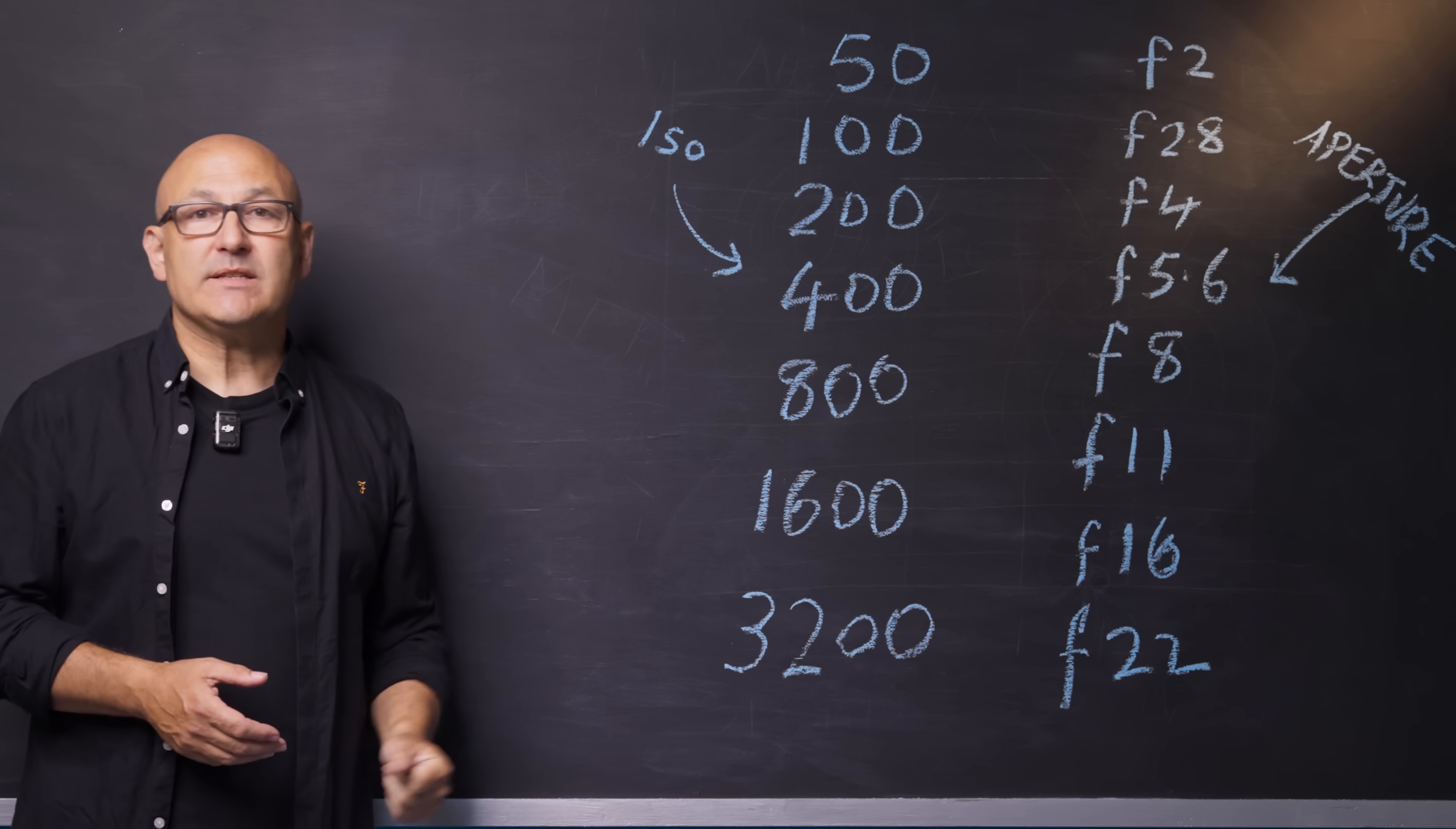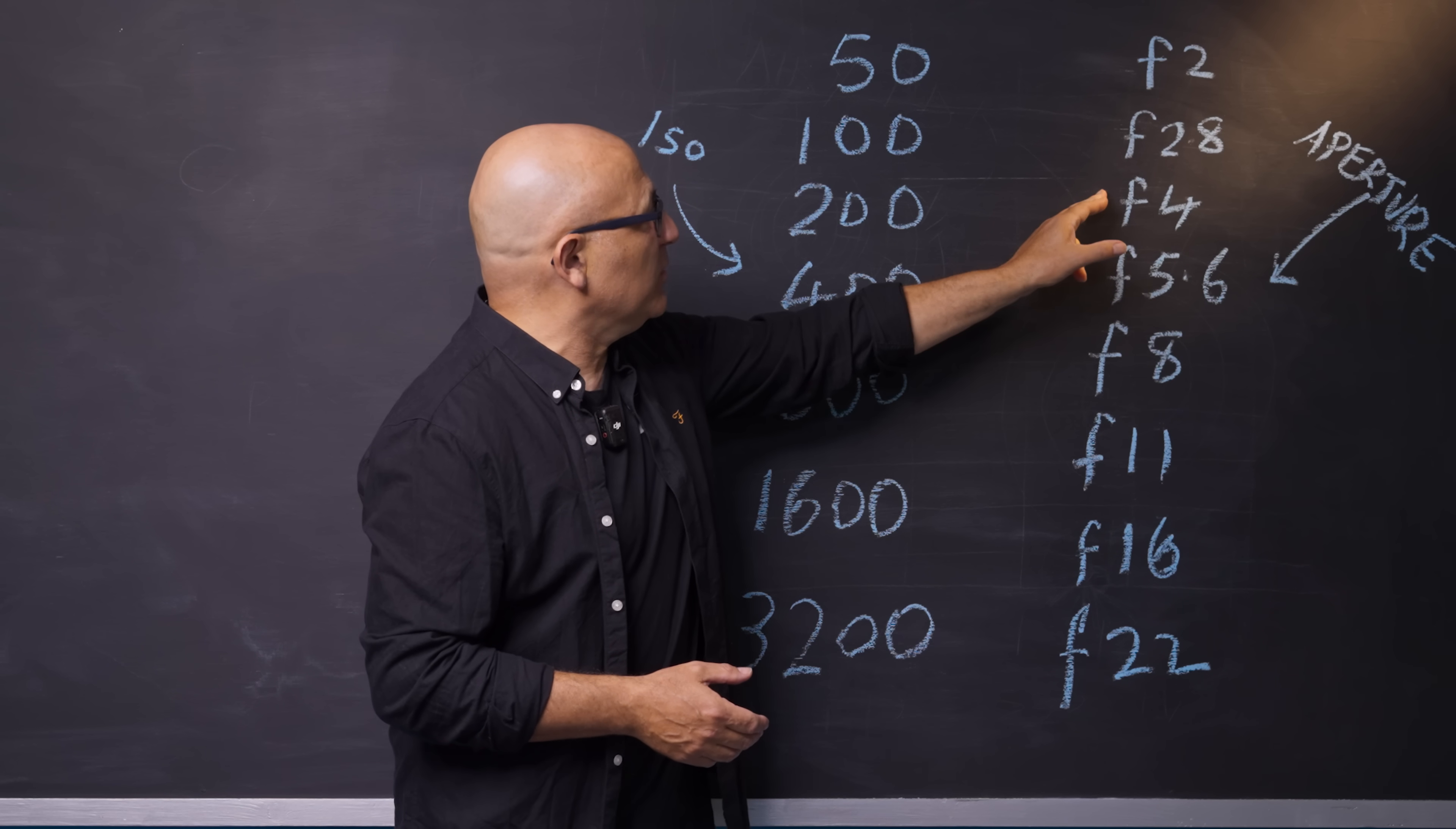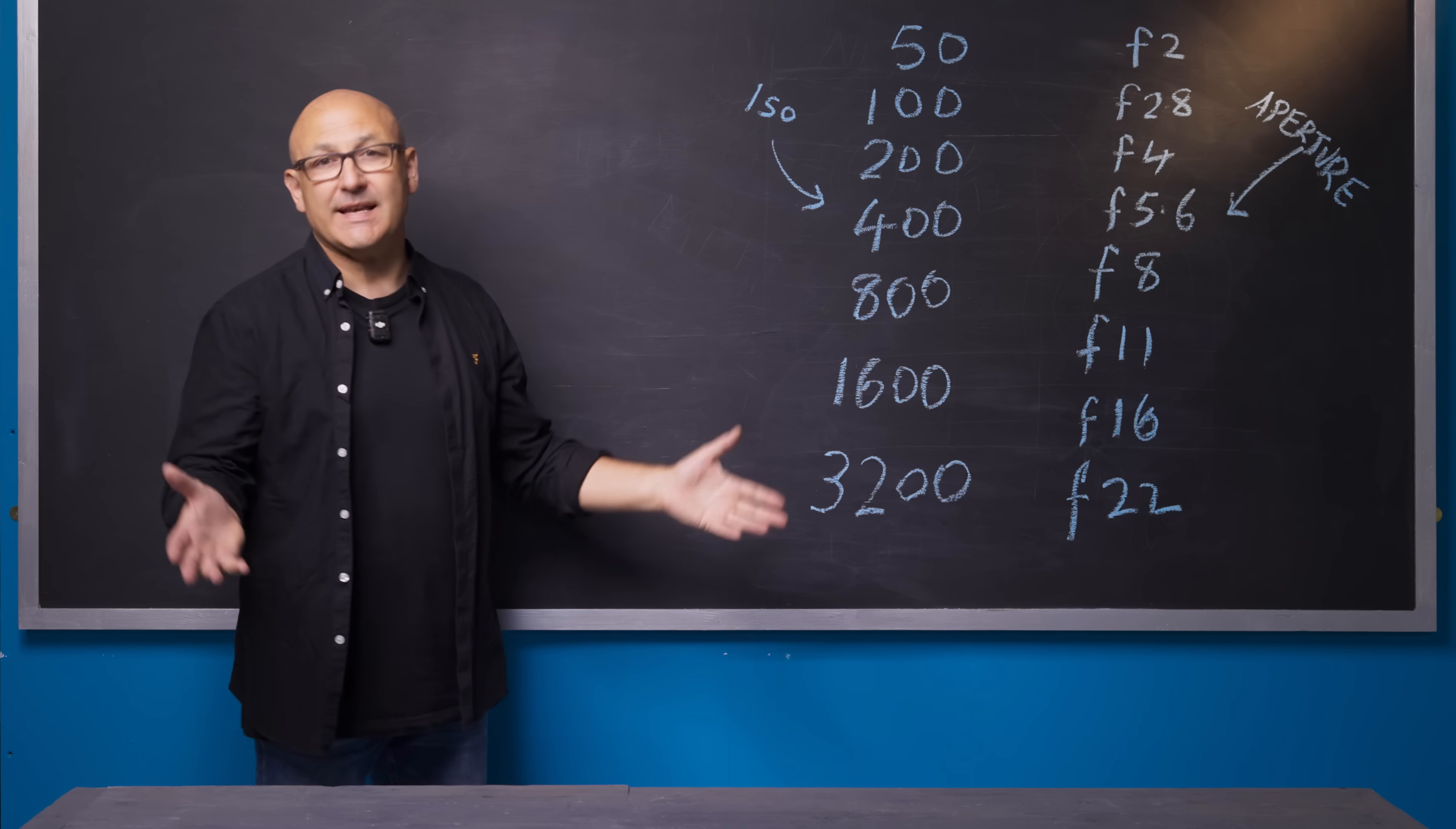It's very similar to the aperture table. Double the amount of light, double the amount of light, double, half the amount of light, half the amount of light, etc.